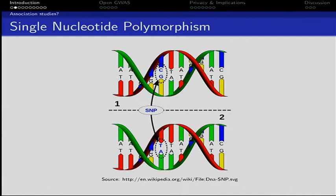What is a single nucleotide polymorphism? What you see here is the DNA of two individuals, and a single nucleotide polymorphism means that a single nucleotide is switched between both. The top one is a GC and the bottom one is a TA, so it's just on one position.